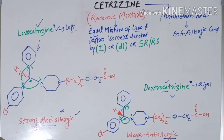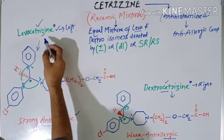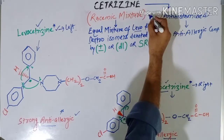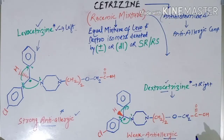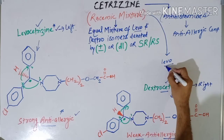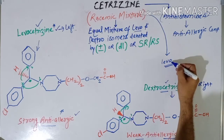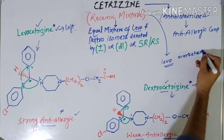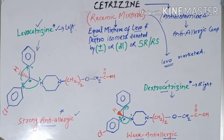When it became known to chemists that only the levo form possesses strong anti-allergy activity and the dextro form is essentially inactive, it was reasoned that consuming the dextro form is useless. Therefore, cetirizine — the racemic mixture — is now separated into its levo form, which is then purified and marketed as levocetirizine.